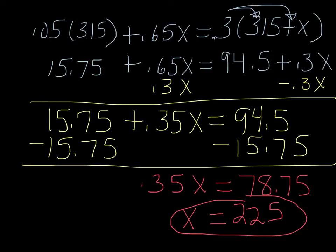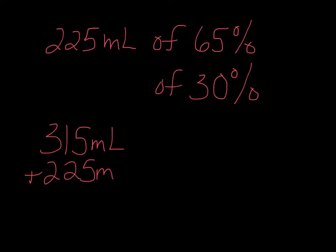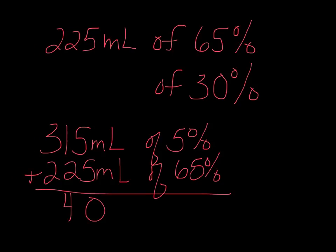So remember, it's going to be 225 milliliters of the 65%. And then it asks how much of the 30%, the desired outcome. Well, we already have 315 milliliters of the solution, and then we're adding another 225. So this is of the 5%, and we're adding 225 milliliters of the 65%. So in total, the milliliters is 540 of the 30%. And that's it.